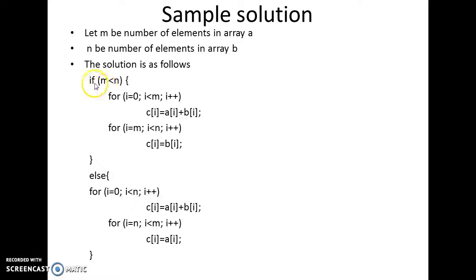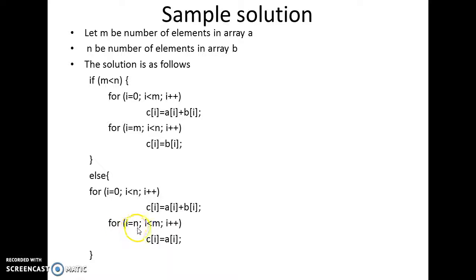If m is greater than n — the else part — then up to index n you add all the elements: the n elements of array b are fewer, so the first n elements of array b are added and stored in array c. Then from index n to m, since n is smaller than m, we copy all the remaining elements of array a into array c. This completes the addition of two arrays of different sizes.